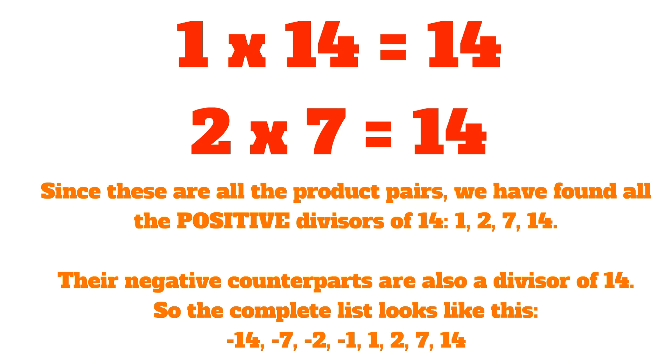So the complete list looks like this: negative 14, negative 7, negative 2, negative 1, 1, 2, 7, and 14 are all divisors of the number 14.